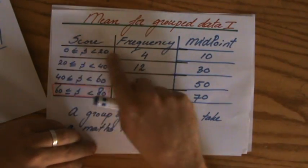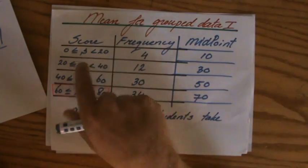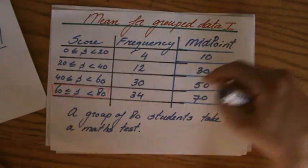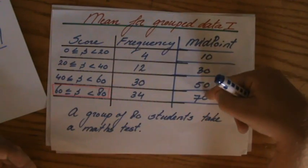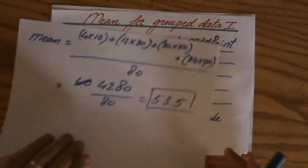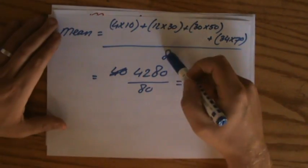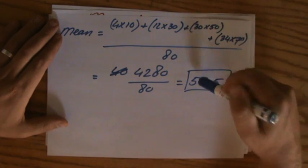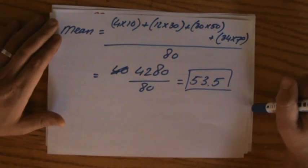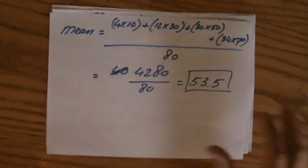Because it's a grouped frequency table, we calculate an estimate of the mean. And why is that? Because we don't know the exact values. We take the midpoint times it by the frequency, like we did before, and then divide it by the total amount of values, 80 in this case. 53.5 is my estimate of the mean. I have another one of these in the next video. See you there.